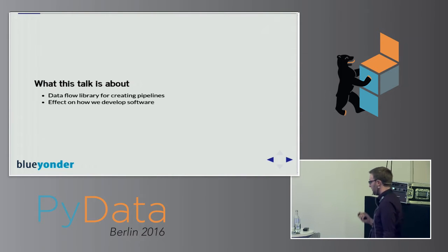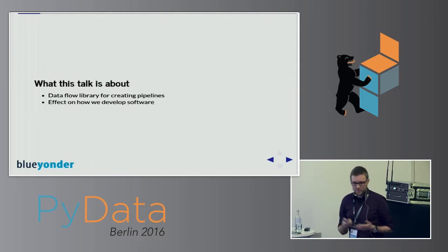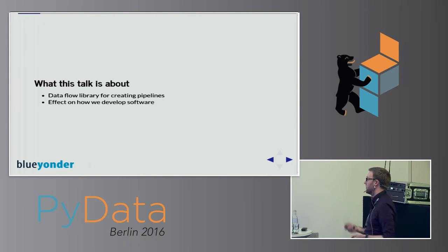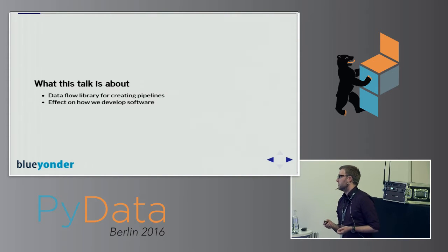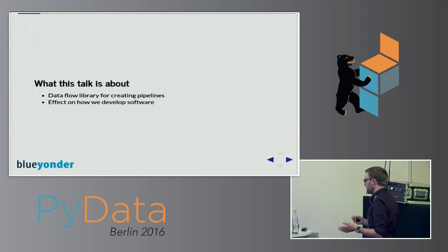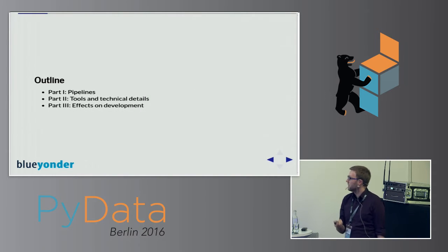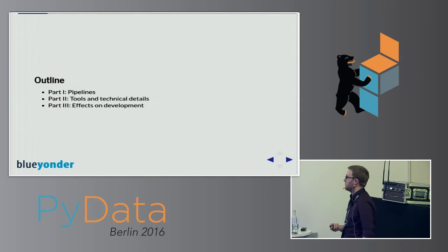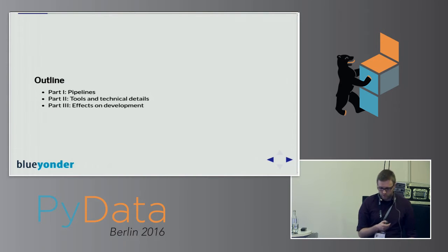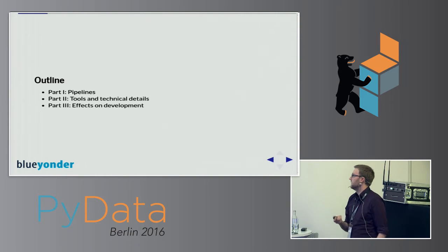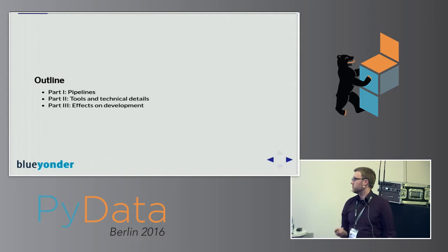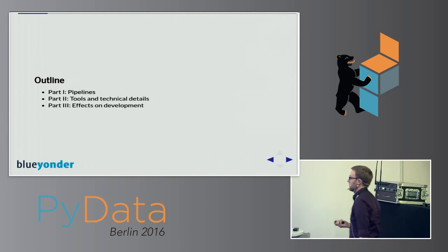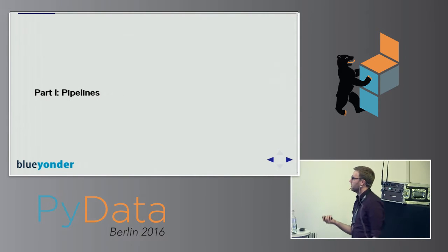Recognizing that a lot of our software has the structure of pipelines, we created a data flow library at Blue Yonder called Yamal, which facilitates the process of creating pipelines. I'm going to talk not only about the library but also the principles behind it and how it affected our development, which is perhaps even more important. The talk is structured into three parts: pipelines, implementation details, and effects on our development process.